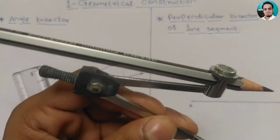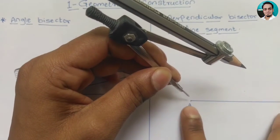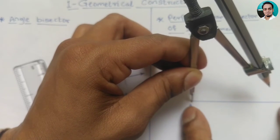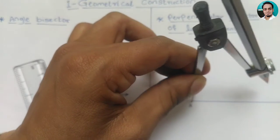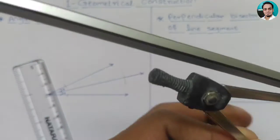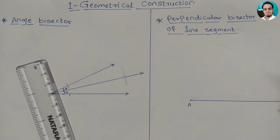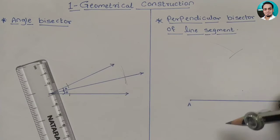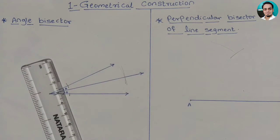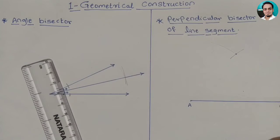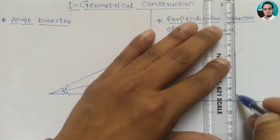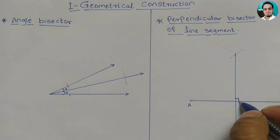We take a distance more than half the length of the line segment on the compass — we don't need to know the exact length. From both endpoints A and B, we draw arcs on both sides. We get two intersection points, and we join those two points. This line joining them is our perpendicular bisector. The points AO and OB will be equal.